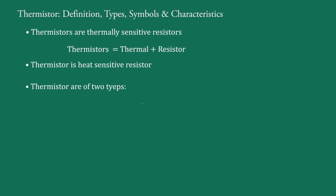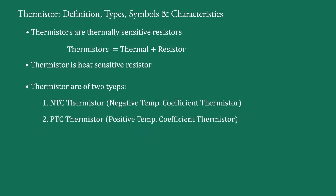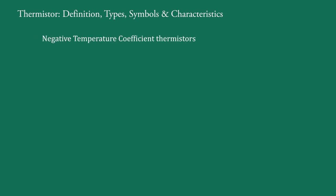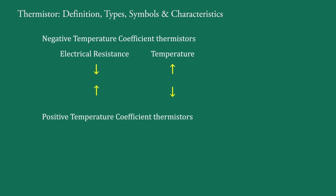Thermistors are of two types: NTC thermistors, that is negative temperature coefficient thermistors, and PTC thermistors, that is positive temperature coefficient thermistors. Temperature coefficient means change in resistance in ohms for a change in temperature of one degree Celsius. NTC thermistors exhibit a decrease in electrical resistance when temperature increases, and an increase in electrical resistance when temperature decreases. PTC thermistors exhibit an increase in electrical resistance when temperature increases, and a decrease in electrical resistance when temperature decreases.